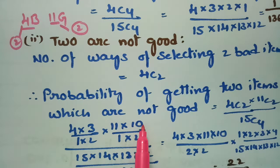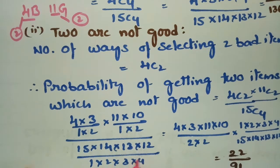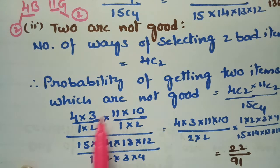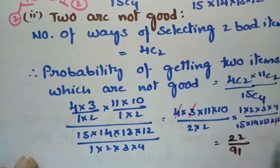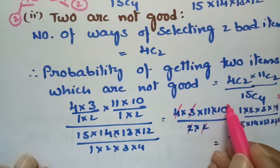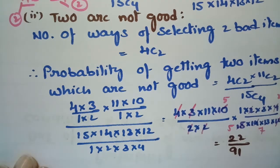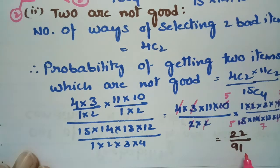Expanding: 4C2 = 4×3 / (1×2), 11C2 = 11×10 / (1×2), and 15C4 = 15×14×13×12 / (1×2×3×4). After cancellation — 4×3=12 cancels, 2 goes 5 times, 10 becomes 5, leaving 7, 5, and 13 — the final answer simplifies to 22 by 91.